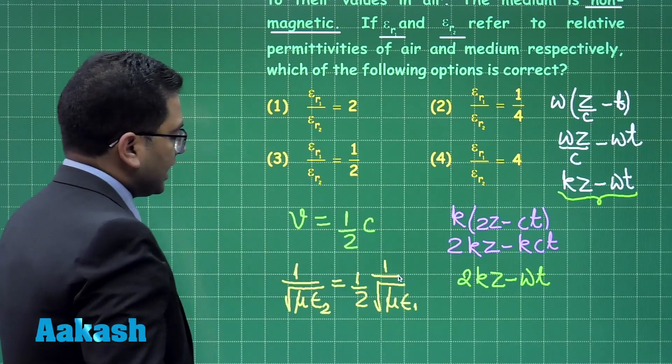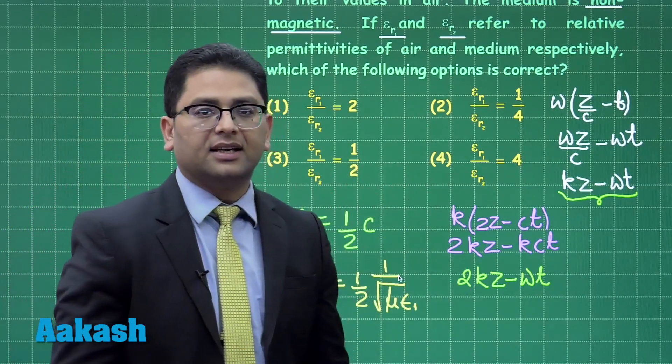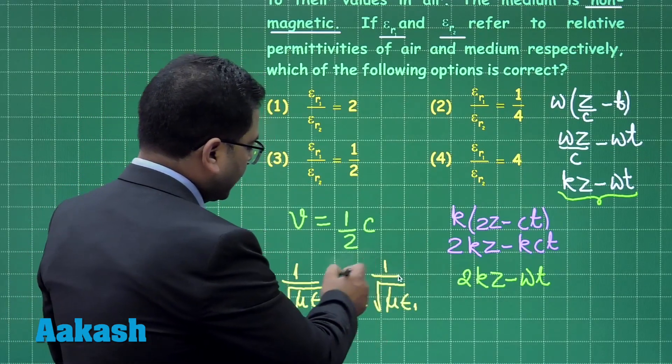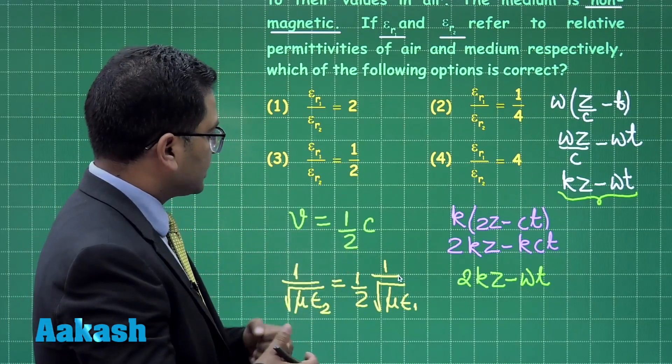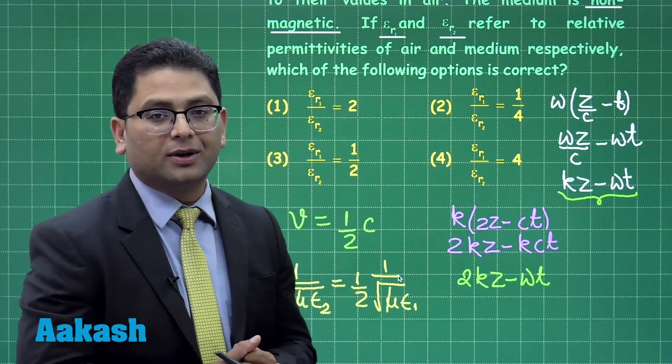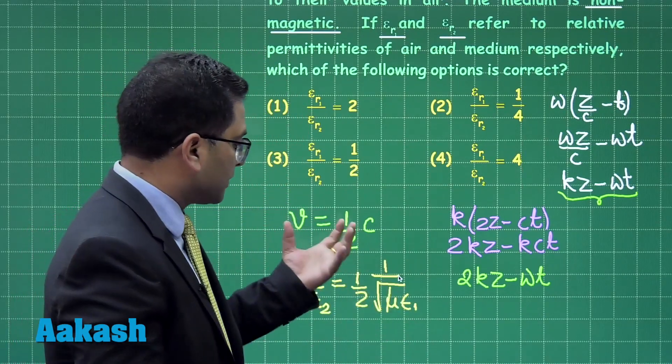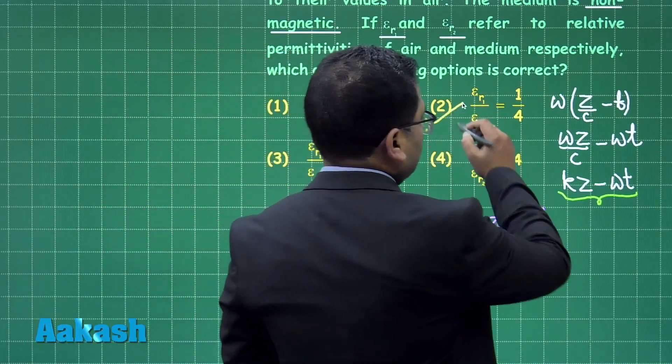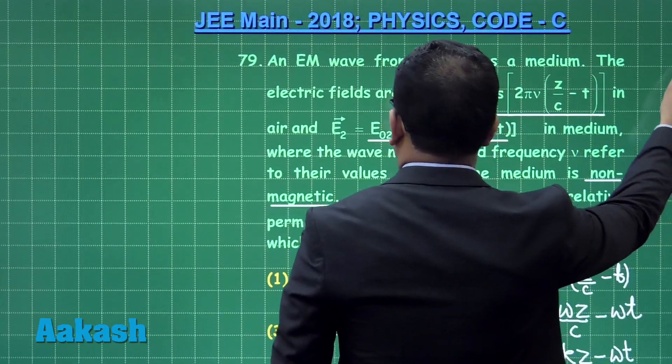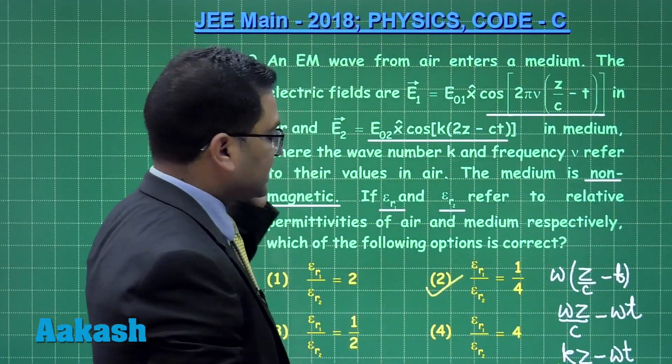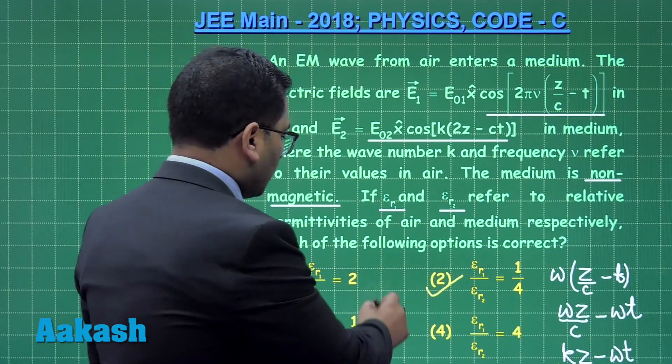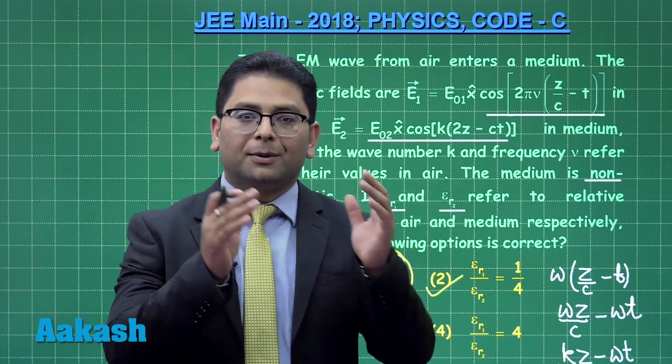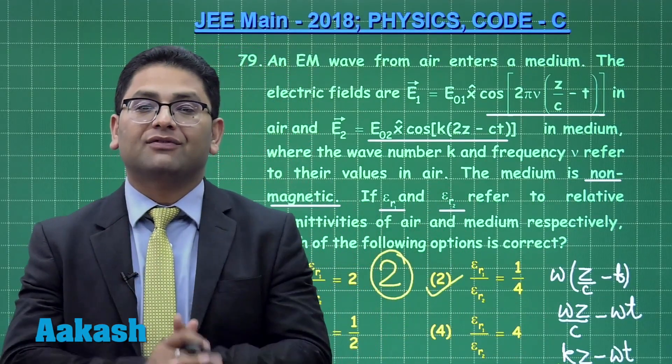This also comes below the denominator. Mu hasn't changed because the medium is non-magnetic, so mu gets cancelled and I need to calculate the ratio of epsilon 1 to epsilon 2. The ratio of permittivity is the ratio of relative permittivity, which gives option 2. The answer for question 79 is 2, a straightforward calculation from a JEE Mains specific portion.